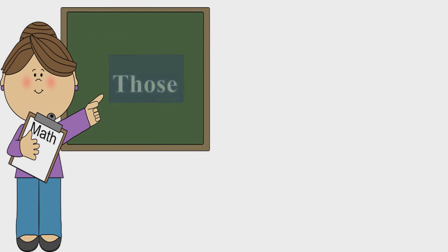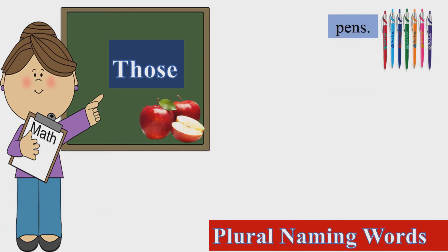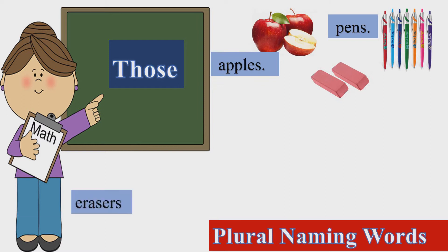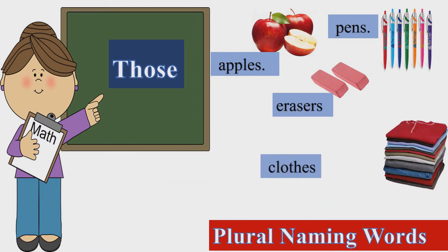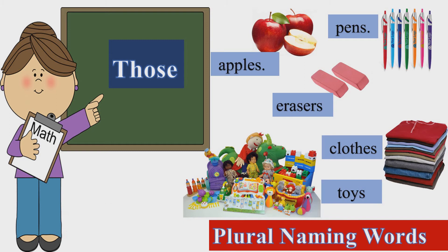हम 'those' use करते हैं जब हम plural naming words की बात करते हैं — जैसे pens, apples, erasers, clothes and toys. यह सारे objects हम से दूर हैं as well as एक से ज़्यादा हैं. So students, जब भी कोई object एक से ज़्यादा हो as well as वो आपसे दूर हो, तो आपको उसके लिए 'those' use करना है.